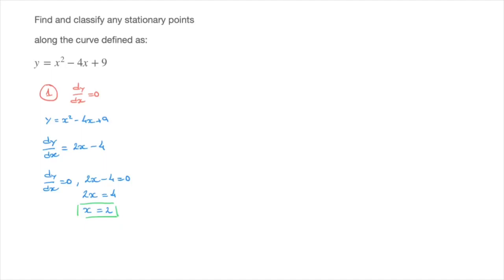When x equals 2, we have y equals 2 raised to the power of 2 minus 4 times 2 plus 9. That's equal to 2 squared, which is 4, minus 4 times 2, which is 8, plus 9.